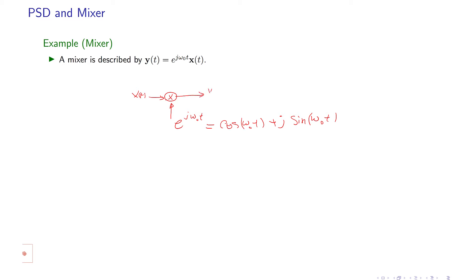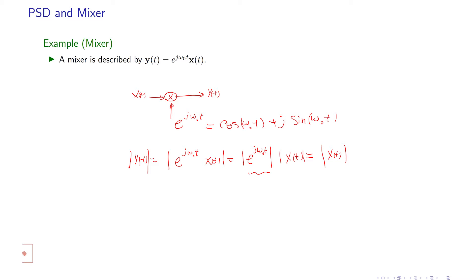You get y of t. Remember that if I calculate the magnitude of y of t, it equals the magnitude of e to the power of j omega naught t times x of t. The magnitude of a product equals the magnitude of e to the power of j omega naught t times the magnitude of x of t, which equals the magnitude of x of t. So the envelope of your output equals the envelope of your input — the magnitude is not changed; it's the same as the magnitude of the input.